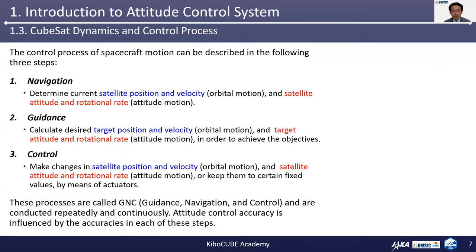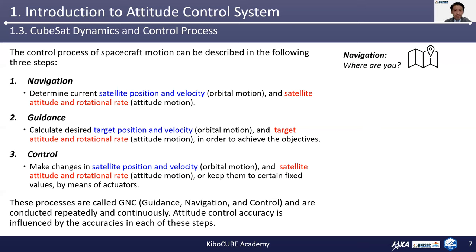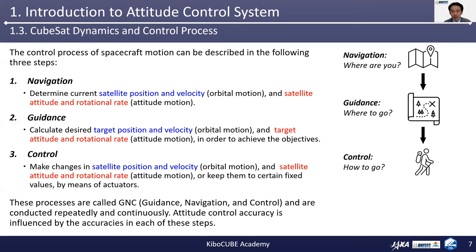The control process for motion of a spacecraft can be described in the following three steps: navigation, guidance, and control. The figure on the right illustrates the analogous situation on Earth. To reach the target place on Earth, you will need navigation in order to know where you are currently located. Then guidance, in order to know where to go. And then control, in order to know how you proceed along the way to the goal. And you will repeat these steps until you finally arrive at the goal.